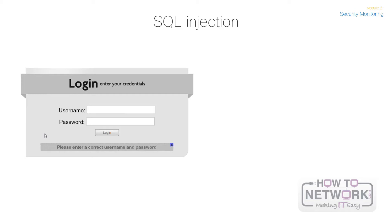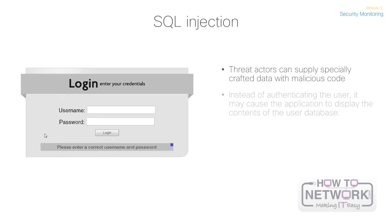For example, a web page might authenticate by requesting a username and password. Once the user provides the information, it is passed to the backend database to validate the credentials in order to permit access. This is where the threat actor can supply specially crafted data in the SQL injection attack, which has malicious code. Instead of authenticating the user, it may cause the application to display the contents of the user database.